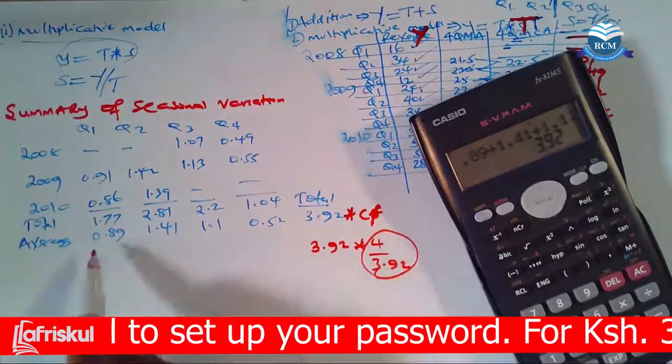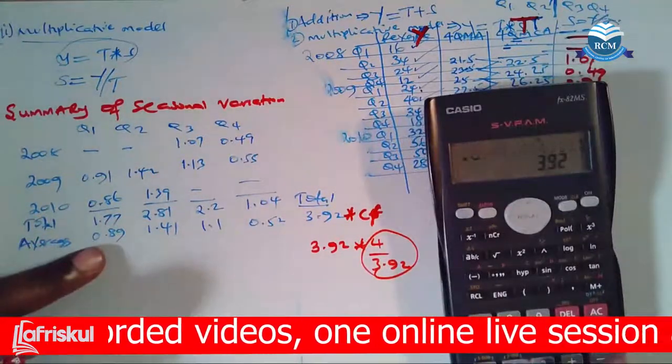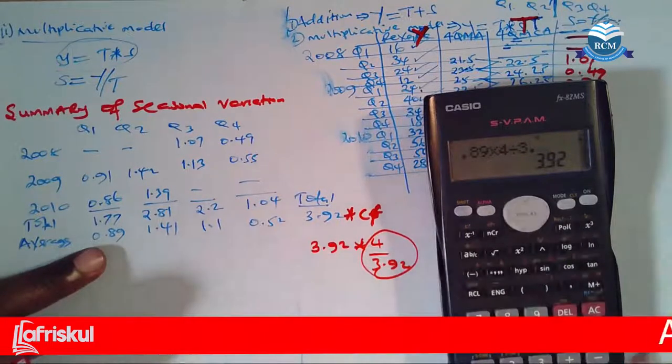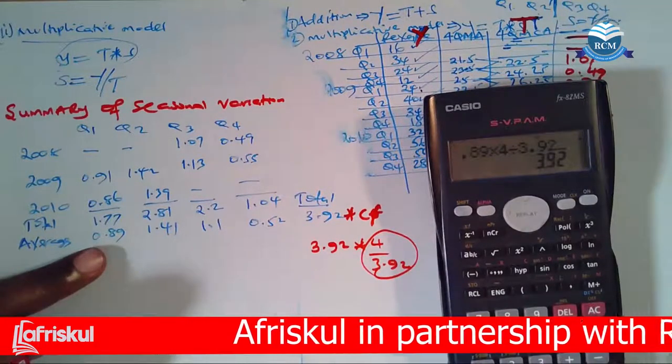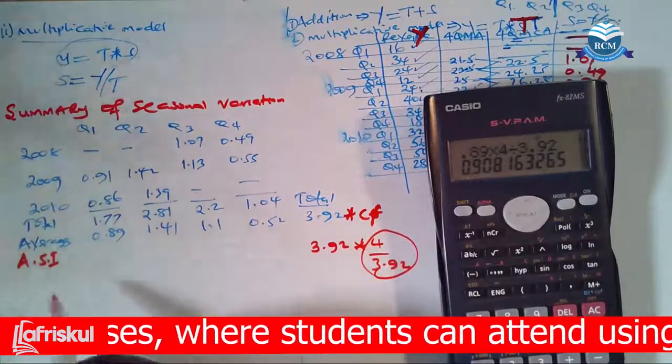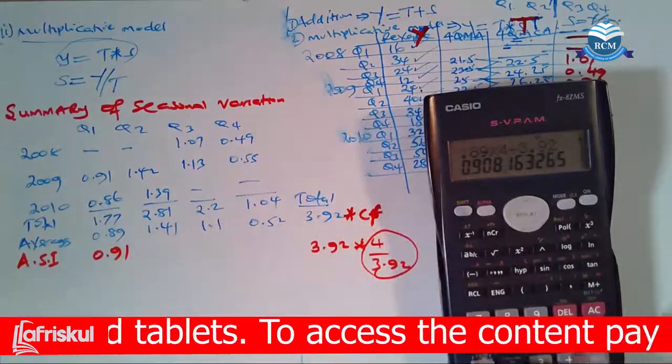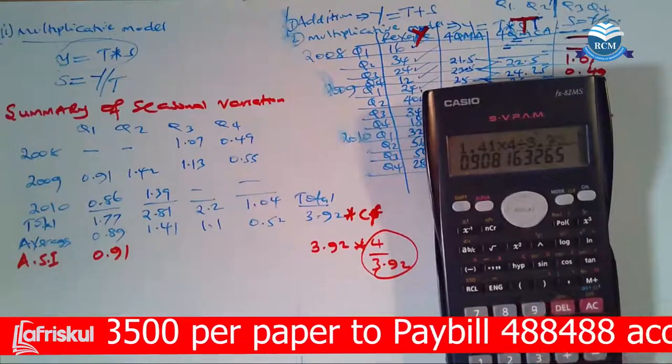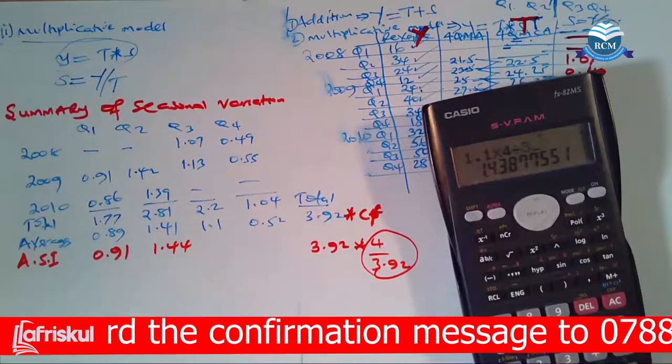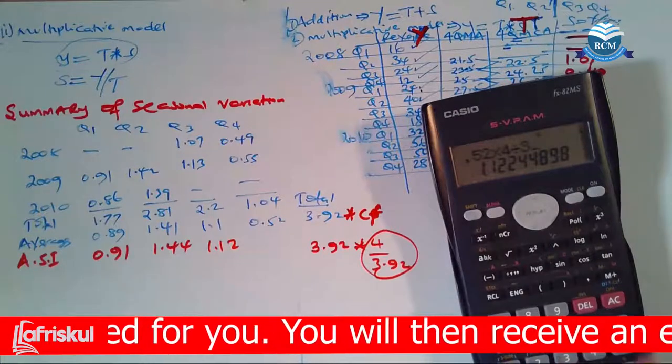So this correction factor has to be multiplied with all these values one at a time. So what I need to do is to come and take 0.89 times this correction factor 4 divided by 3.92. The corrected averages, what you call the ASIs, average seasonal indices, the adjusted seasonal indices. So then these one here will be 0.91. These one here by the correction factor will be 1.41 times 4 divided by 3.92, which gives me 1.44. So 1.1 times 4 divided by 3.92, which gives me 1.12. We have 0.52 times 4 divided by 3.92.